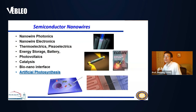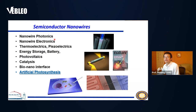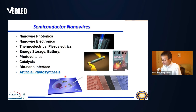Over the last 25 years or so, semiconductor nanowire research has expanded into a really big field, with many groups working on it. It has emerged into many subfields like nanowire photonics, lasers, waveguides, electronics, transistors, thermoelectrics, piezoelectrics for energy conversion, energy storage, nanowires used in batteries, photovoltaics, catalysis, and bio-nano interfaces. Today I will focus on utilizing semiconductor nanowires for artificial photosynthesis, which is solar-driven CO2 fixation.